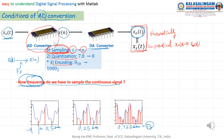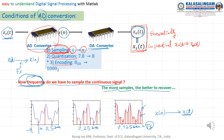Of course, you can guess: if we have many samples of the discrete time signal, it is easy to recover the blue signal. That means we can convert X of n back to X of t. If we have more samples, it is easy to recover X of t from X of n. So we need many samples.